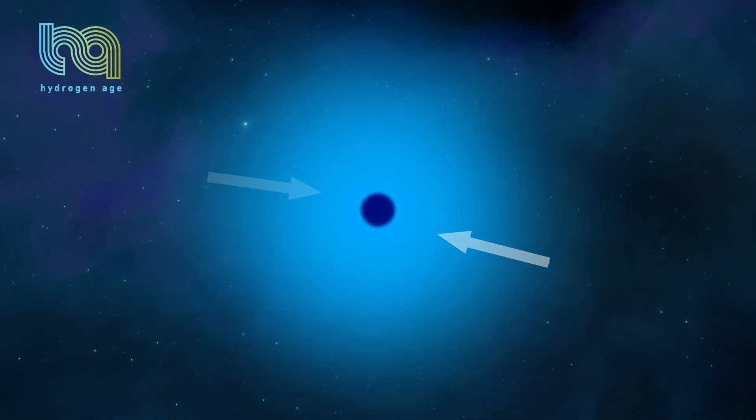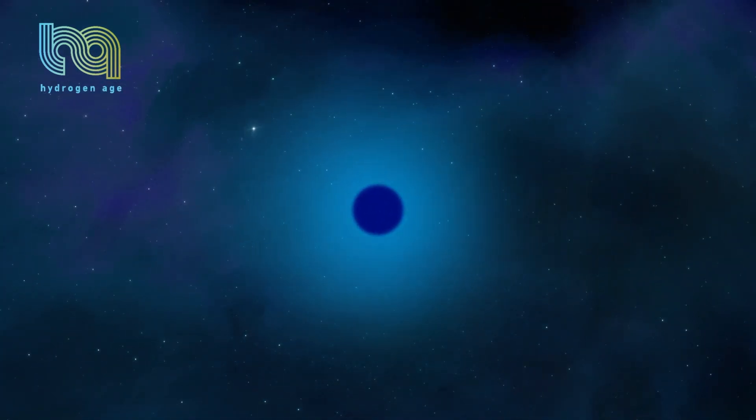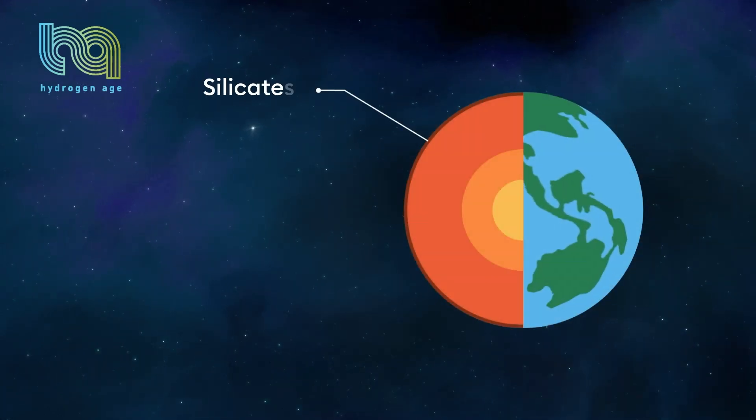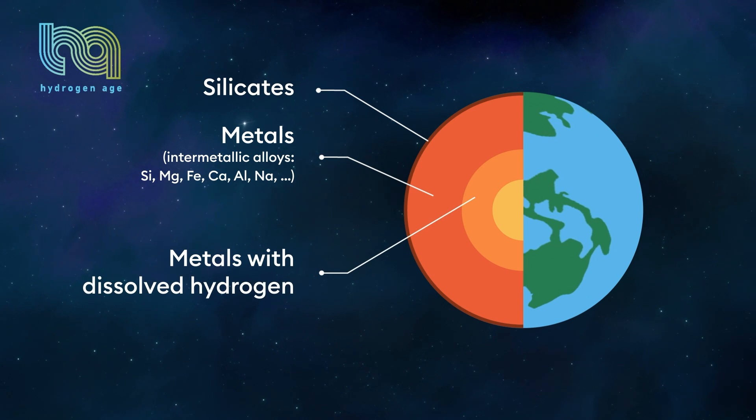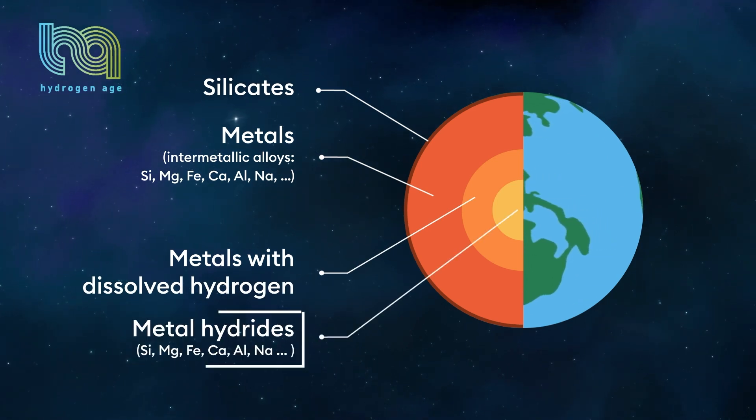Based on this hypothesis, modern Earth should have the following structure.